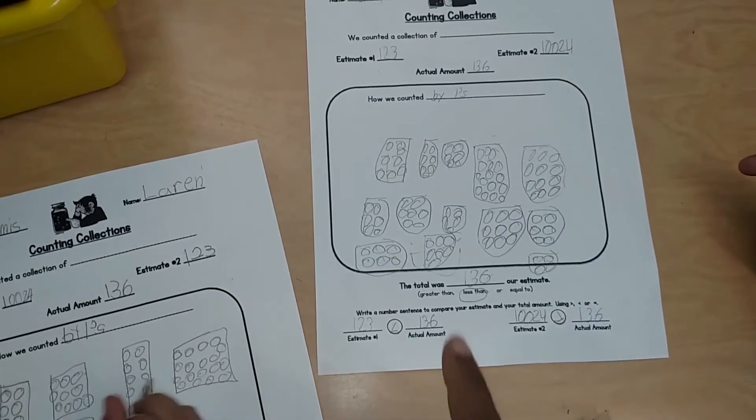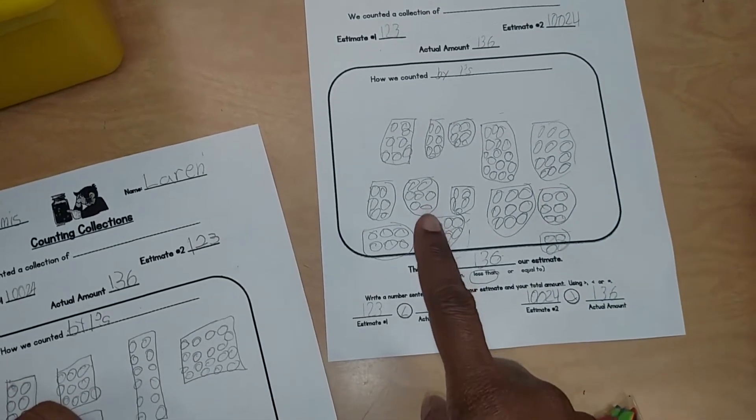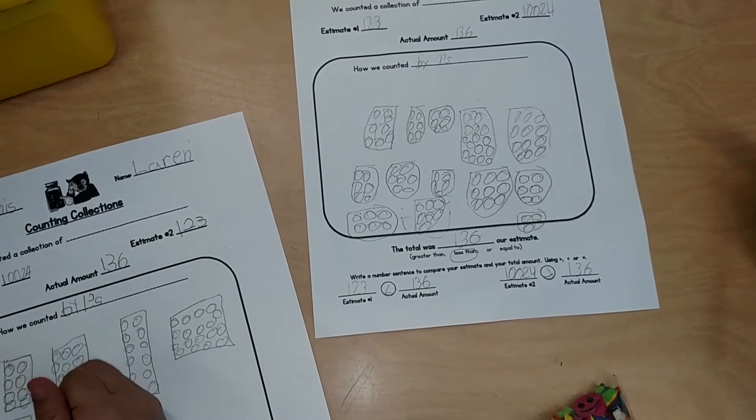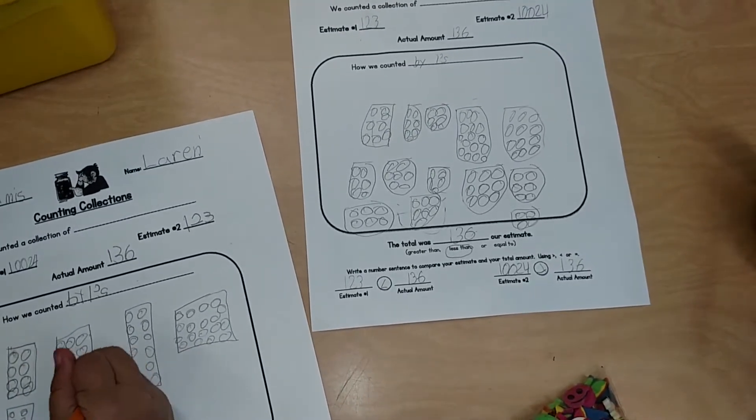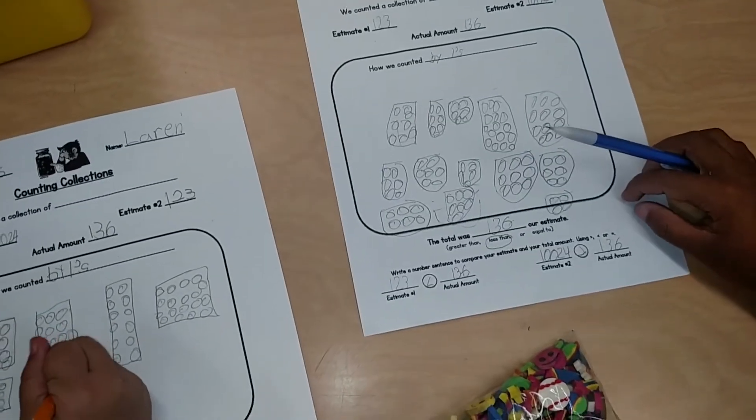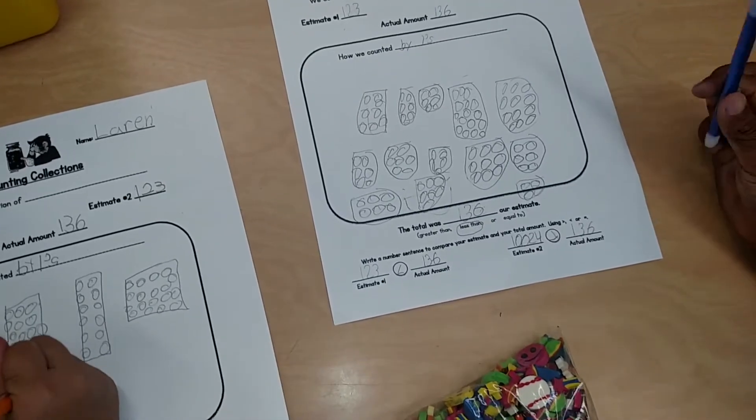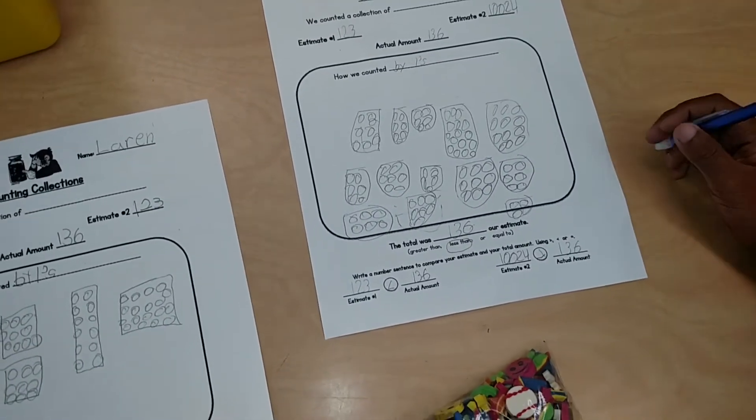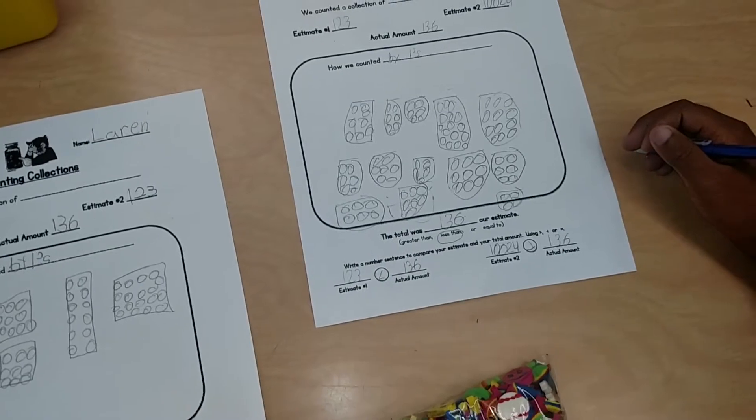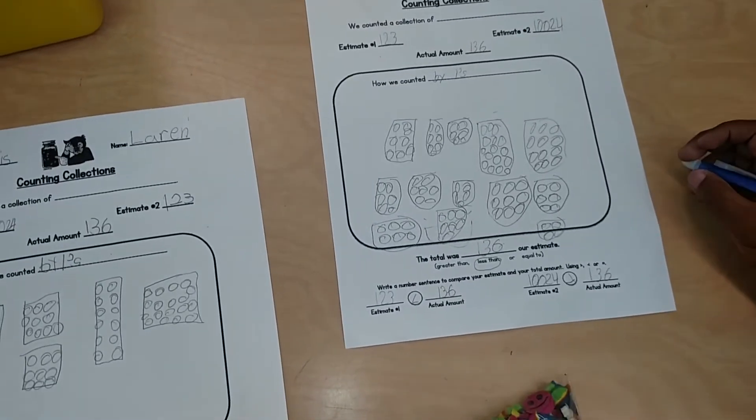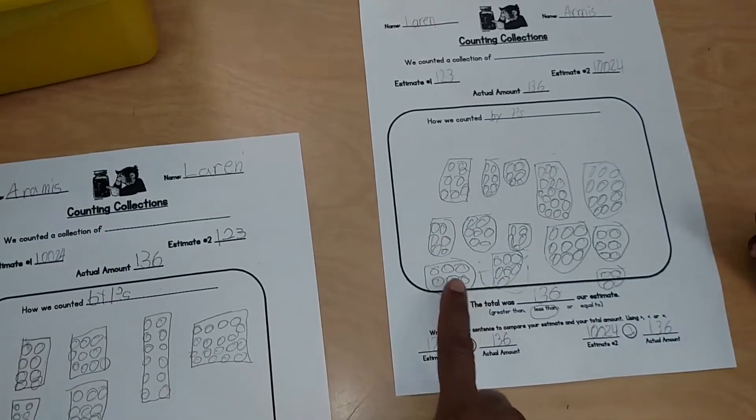So when I look at your paper, I see boxes with a bunch of little circles in them. Is that correct? I don't know how many are in each box. I would have to go back and count them. Is there a way you could record so that when I look at your paper after school I know exactly what you did?